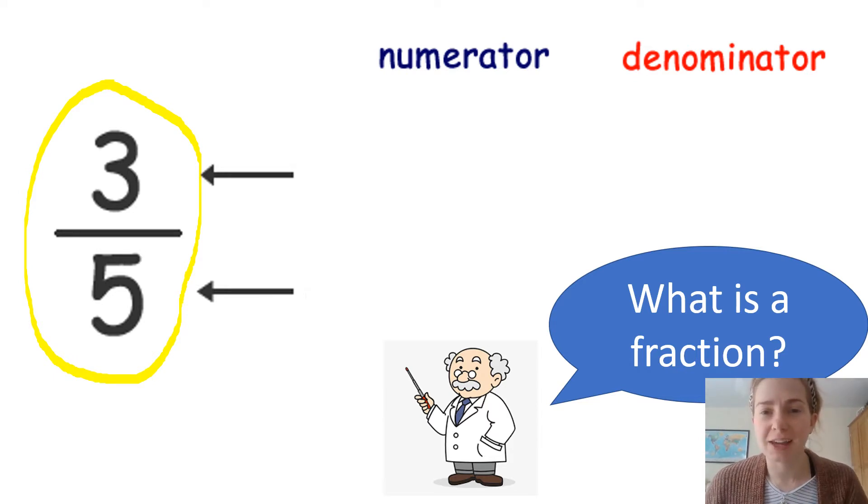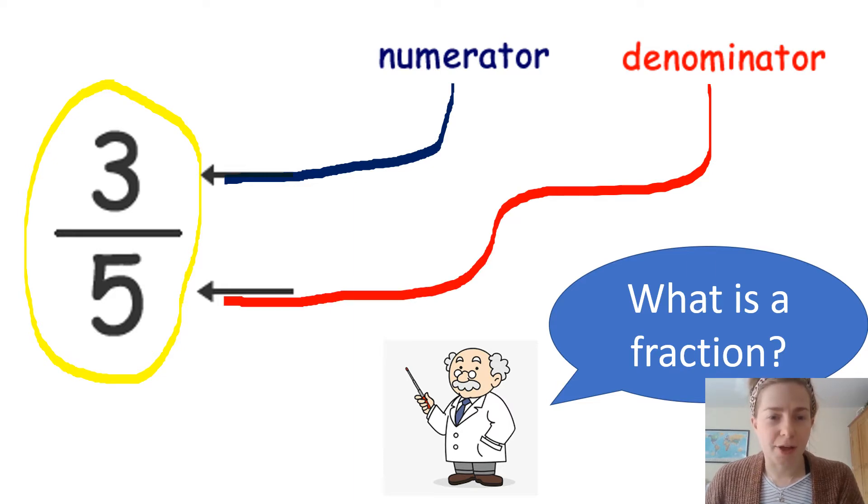Maybe pause me and have a think. Super, our numerator is the number on top, and our denominator is the number underneath.